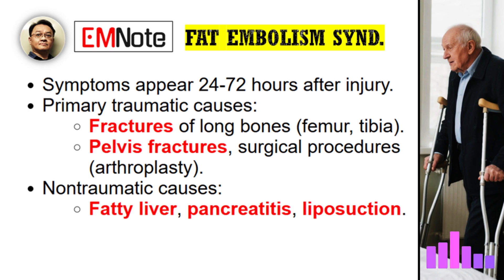What are the most common traumatic causes? Trauma is definitely the most common pathway. Primarily, we're talking about fractures of long bones — think femur, tibia — and pelvic fractures too. These bones have a lot of fatty marrow, and when they break, especially in a closed fracture, fat can get into the venous system. Beyond fractures, certain surgeries are also big triggers: pelvis or knee arthroplasty joint replacements, and procedures like intramedullary nailing and reaming, where working inside the bone marrow cavity can increase pressure and push fat out.